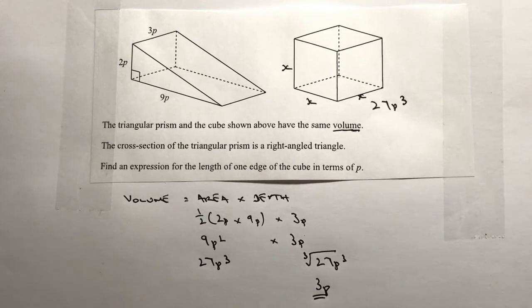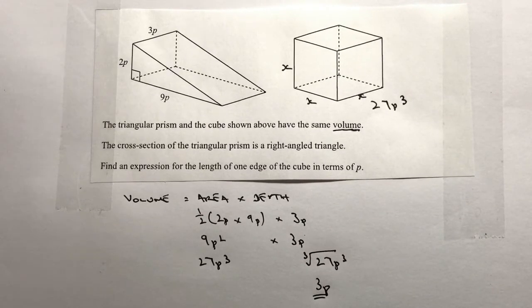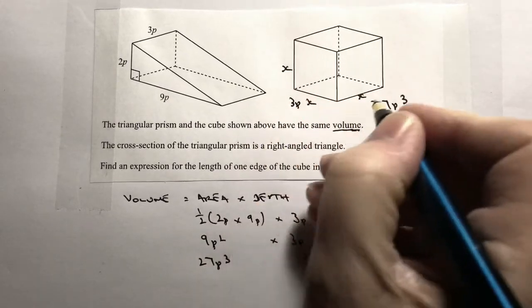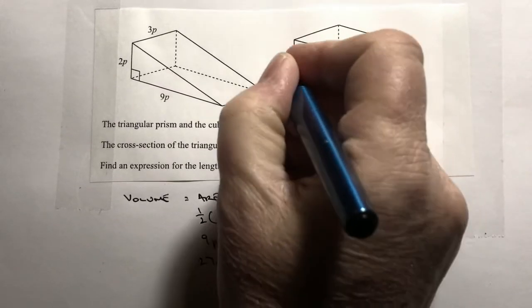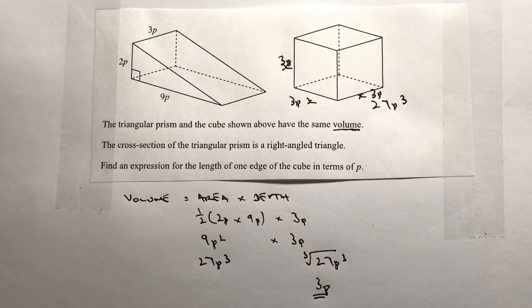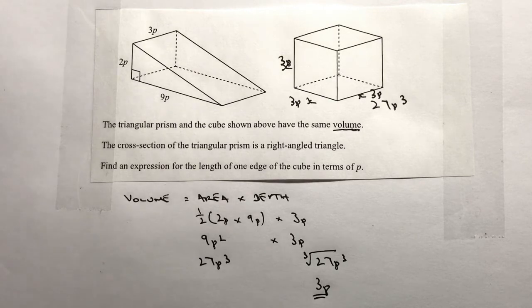So the length of each of the edges of this particular cube must be 3p. That will give us the expression for the length of one edge of the cube in terms of p. I hope that's been okay for you. Please don't hesitate to add a comment below, subscribe to the site, and I'll look forward to seeing you in the next video.